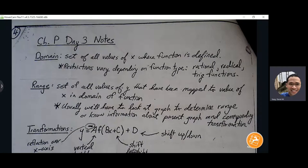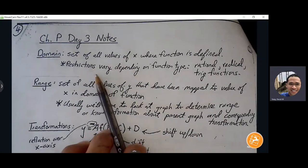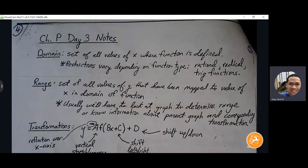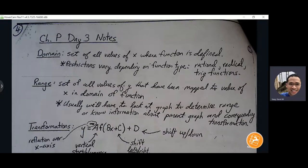Domain is the set of all values of x where our function is defined. Restrictions can vary depending on the function type — rational functions, radical functions all have different restrictions. A lot of times we don't have to look at the graph to find the domain; we can use algebraic steps to find out where the restrictions are and from there determine what the domain is.